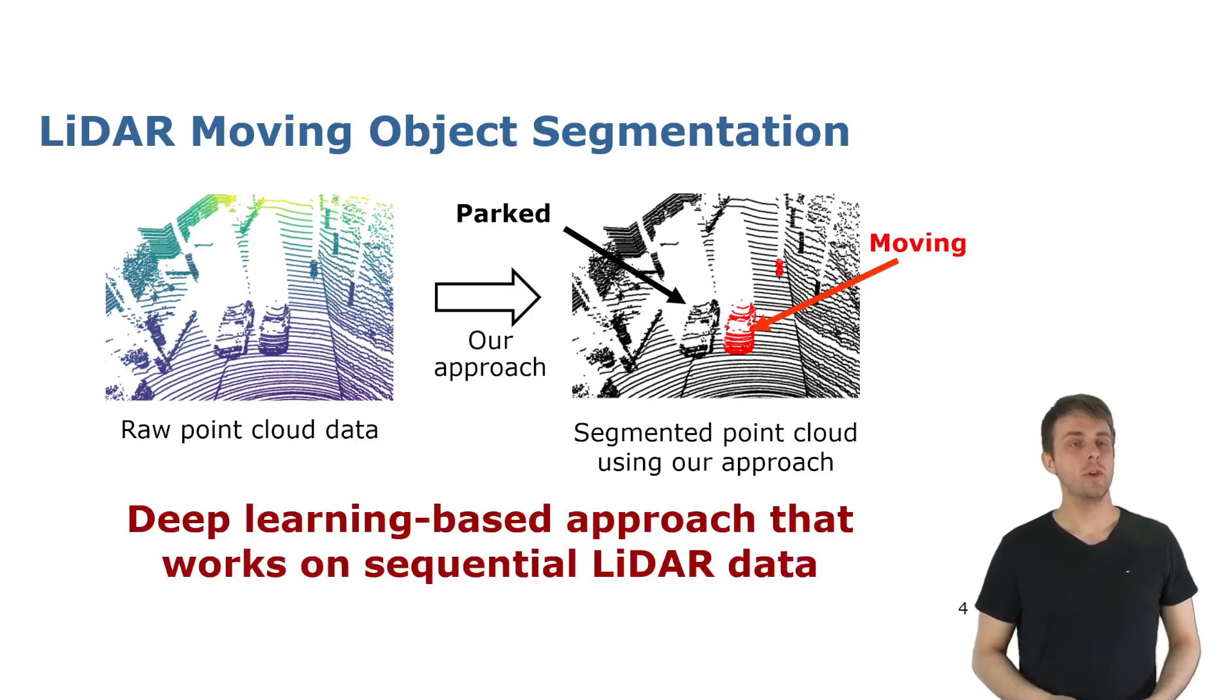In this work we exploit a deep learning based approach that takes as input a sequence of LiDAR scans and outputs a binary semantic mask of moving and non-moving. Our goal is to find a way to automatically generate training data for this approach in an online fashion and use this data to train the model when being deployed in different environments.